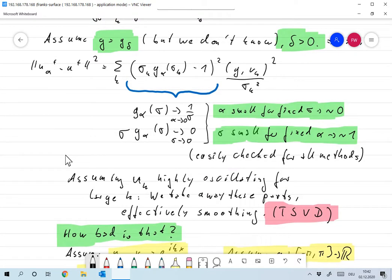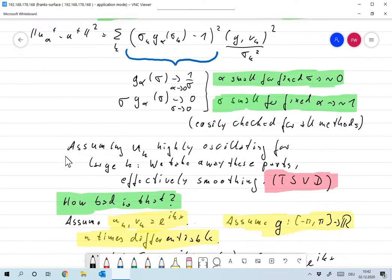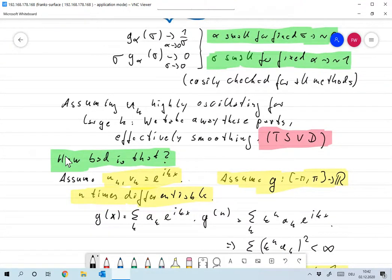So the question is what does that actually mean? Let's assume further and we've shown this for one or two examples that uk is highly oscillating for large k. So the higher k is, the more oscillating the singular functions uk are. What we are effectively doing is we're taking away highly oscillating parts of the function and that means we're smoothing it.